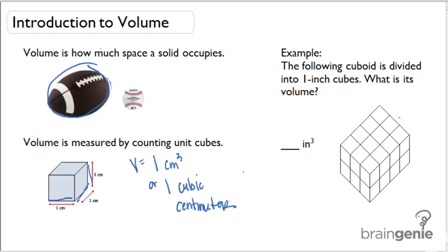Let's take a look at this example. Below we have a cuboid that's divided into 1-inch cubes. A cuboid is another name for a rectangular prism. Rectangular prisms or cuboids have 6 faces. Because all the faces are not congruent, it's a cuboid as opposed to a cube. A cube has 6 faces, but all faces are congruent.